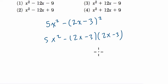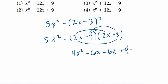And so now I'm going to distribute. 2x times 2x is 4x squared. 2x times negative 3 is negative 6x. Negative 3 times 2x is negative 6x. And negative 3 times negative 3 is positive 9.